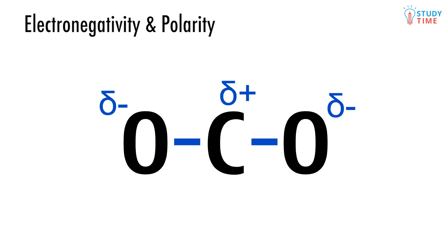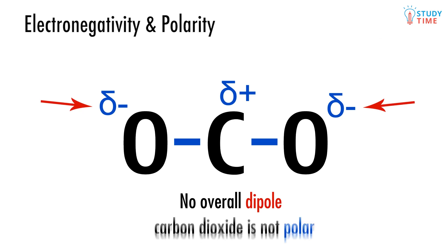Because both its ends have the same slightly negative charge, the polar bonds cancel, and there is no overall dipole. This is all a long roundabout way of saying that carbon dioxide is not polar.